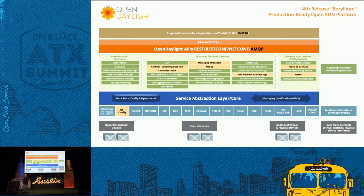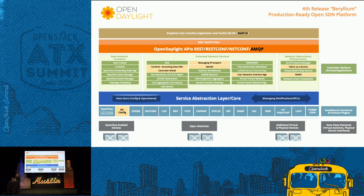I'm going to talk first about what Open Daylight is. This is a slide of the architecture for our current release. As an SDN controller, this is really an application that has a northbound interface, a variety of services for managing your network, a core set of infrastructure so that those services can talk to one another, as well as talk to some southbound protocols to manage your network.